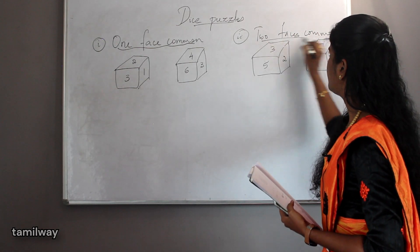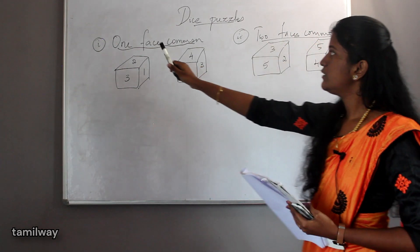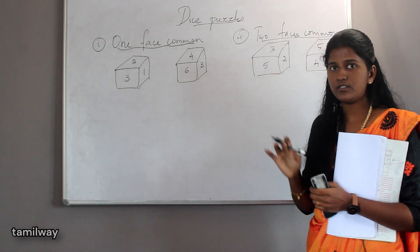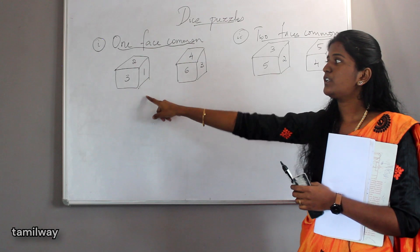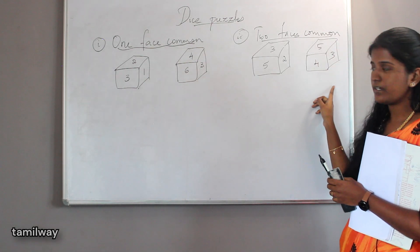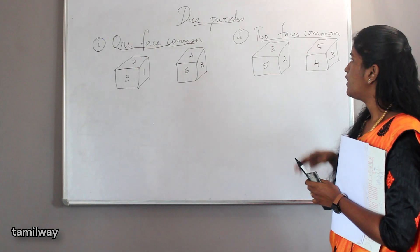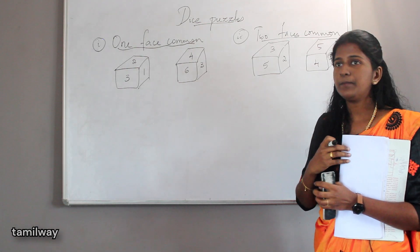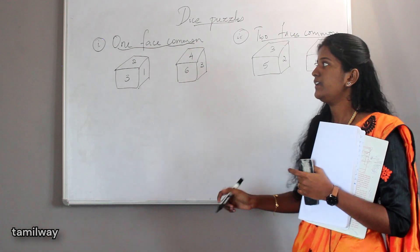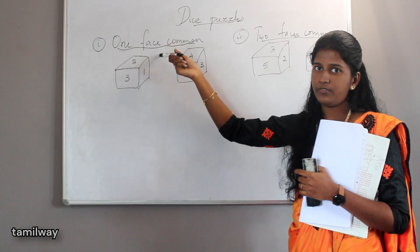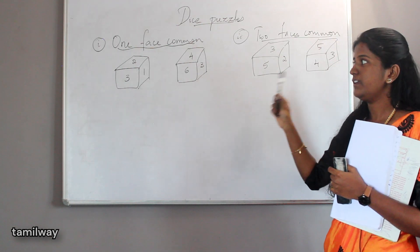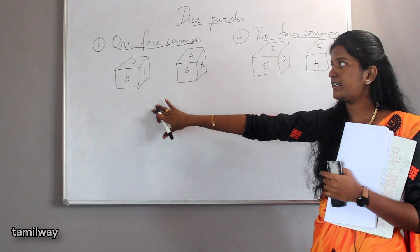Two faces common. So we have either one face common or two faces common between two cubes. If one face is common or two faces are common, then we can solve the opposite face question.